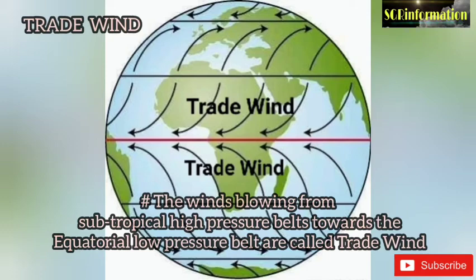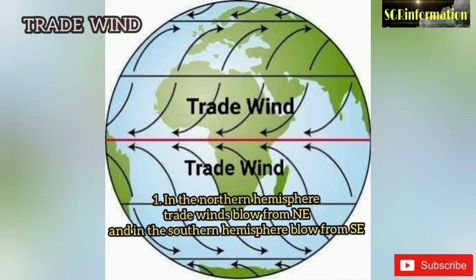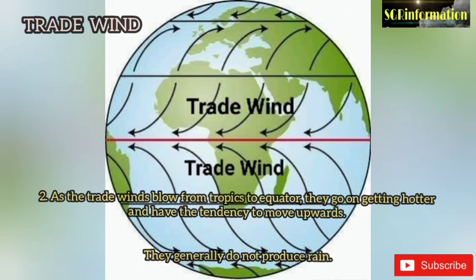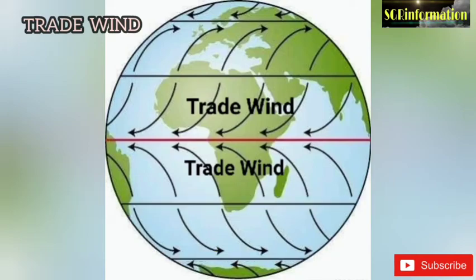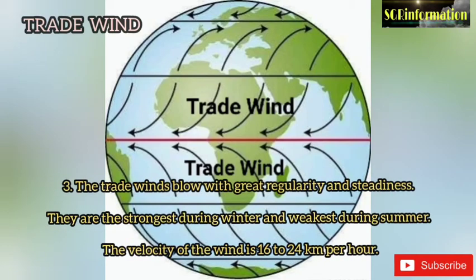Some characteristics of trade winds: number one, in the northern hemisphere trade winds blow from the northeast, and in the southern hemisphere from the southeast. Number two, as trade winds blow from the tropics to the equator, they get hotter and tend to move upwards — they generally do not produce rain. Number three, trade winds blow with great regularity and steadiness; they are strongest during winter and weakest during summer. The velocity of the wind is 16 to 24 km per hour.